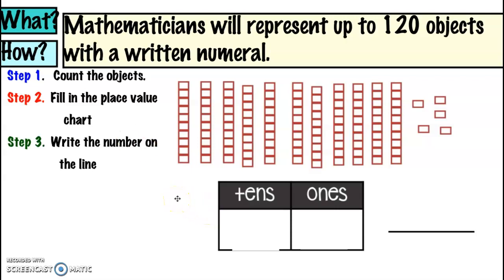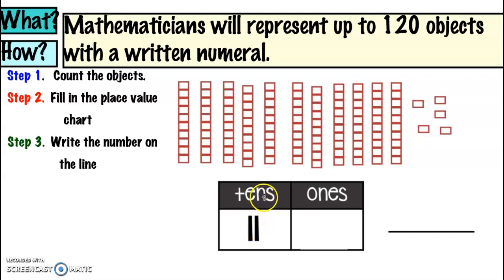So we have base ten blocks and we're going to follow the same steps: count the objects, fill in the place value chart, and then write the number on the line. How many tens do we see? They can get a little tricky, so it's best to count them — eleven groups of tens, so eleven tens. How many ones? Five ones. Eleven tens and five ones is one hundred and fifteen.